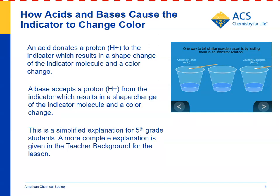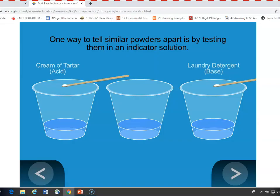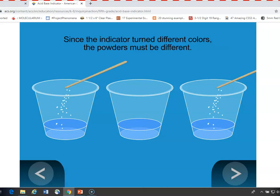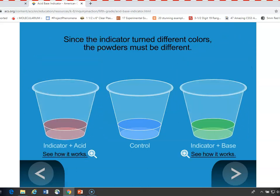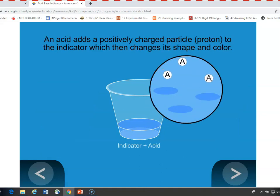Here's an animation that shows the color change and goes further to try to show how the indicator changes in order to make the color change. Here we're adding cream of tartar, an acid, and laundry detergent, a base, to two samples of indicator solution. Just like kids saw, the indicator with the acid will turn slightly reddish and the indicator with the base will turn greenish. Now let's take a look inside. If you add an acid to the indicator, the acid donates a proton to the indicator, changes the indicator shape, and causes the color change.